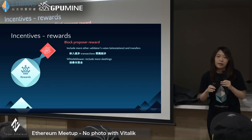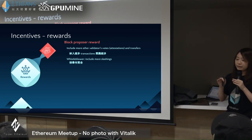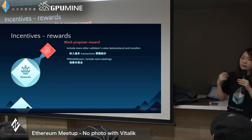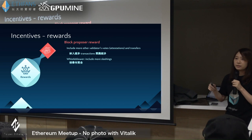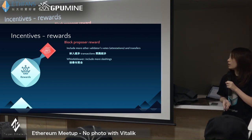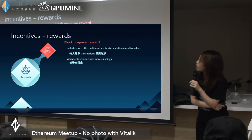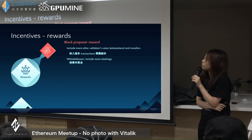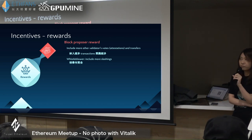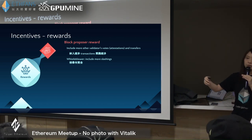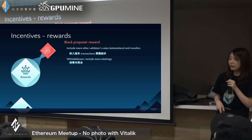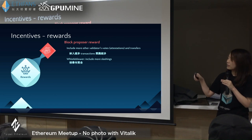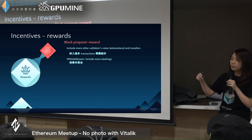We call those votes 'attestations.' An attestation is a data structure that points out what the validator votes for. It includes signatures that validators use to tell others which shard chain or which Beacon Chain is the valid chain they believe it is. There are also transfers. For the block proposal, we have a special reward called 'whistleblowing' — you can report other validators who are malicious. If they did something bad, you can report them and get their slashed ether as your reward.